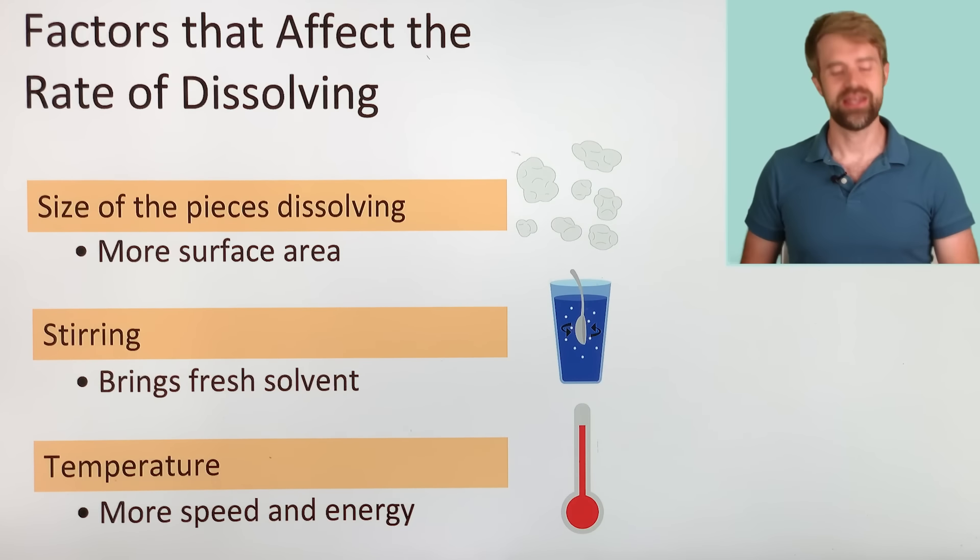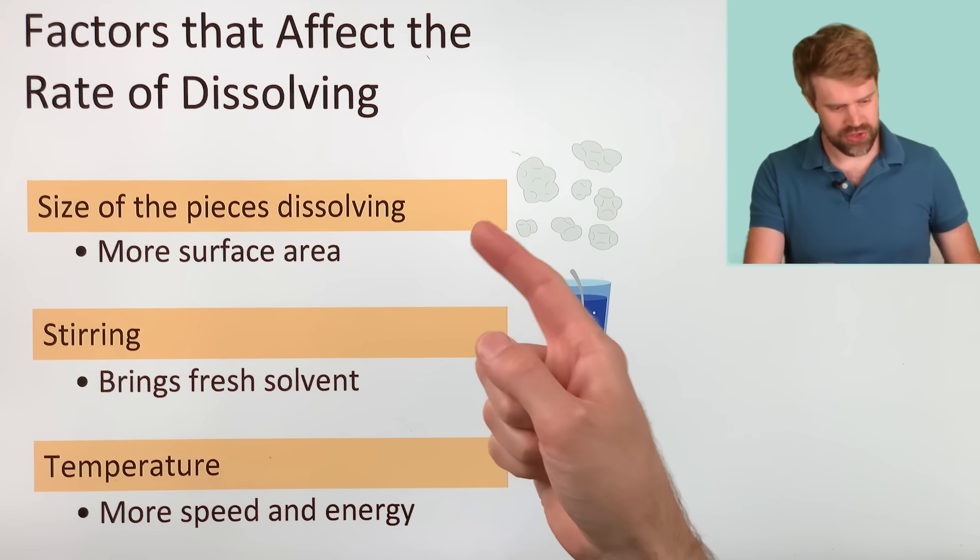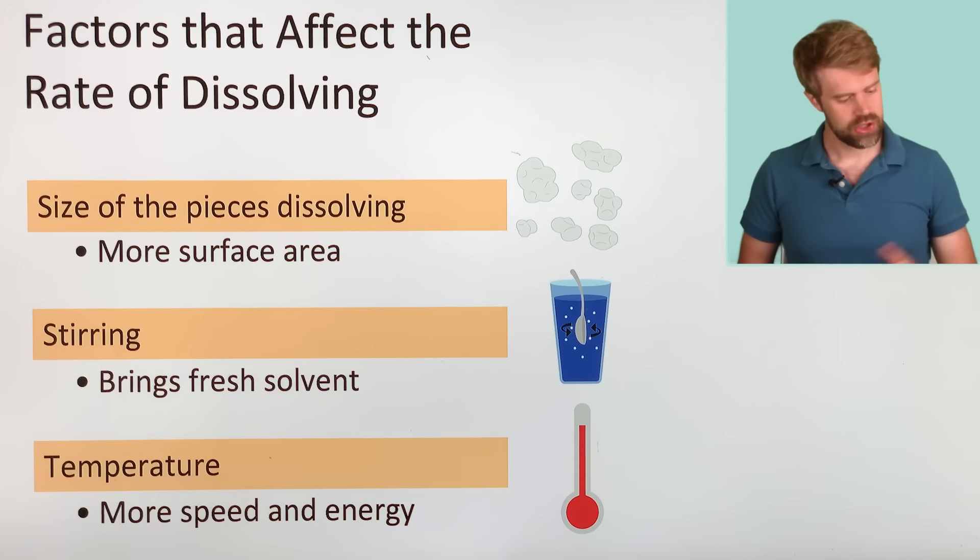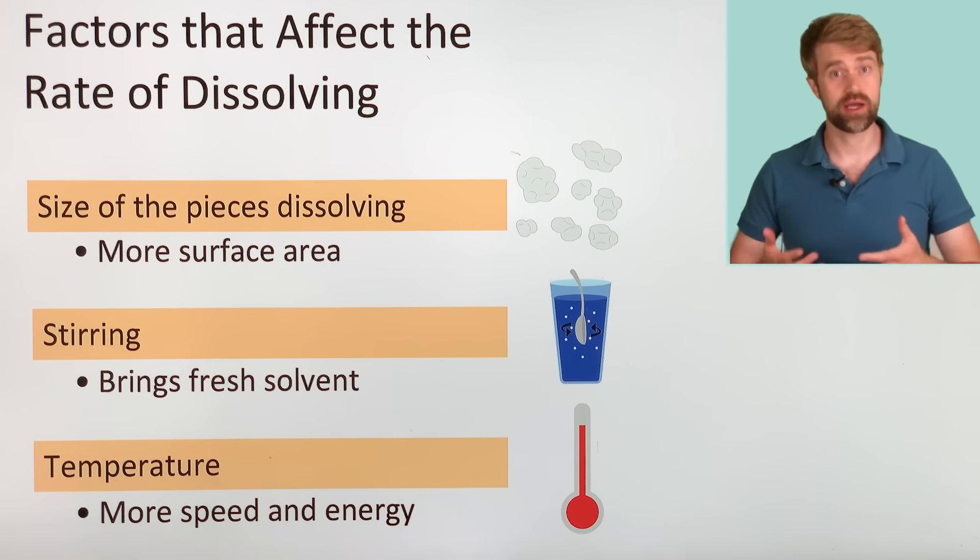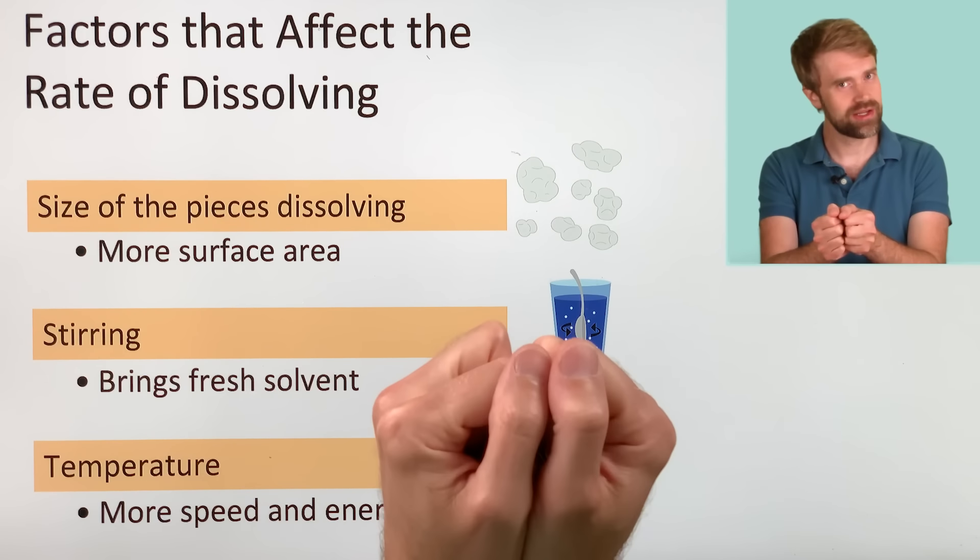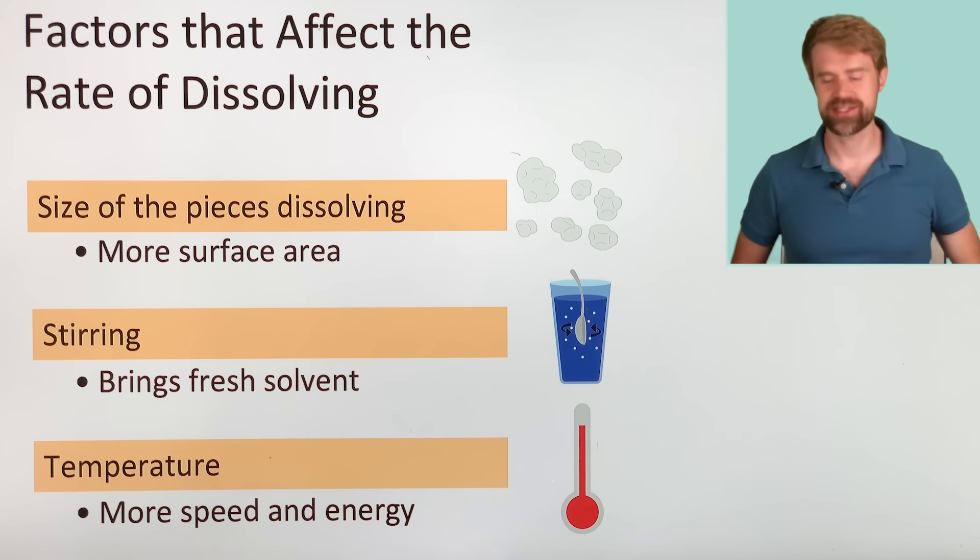So now you can see the three factors that increase the rate of how something dissolves. You can crush the solute into smaller pieces, which increases the surface area. You can agitate, or stir, which brings fresh solvent in contact with a solute. And you can increase the temperature, which gives the particles more speed and energy so that they collide more often and with more force. Think about all three of these the next time you dissolve a sugar cube into your tea.